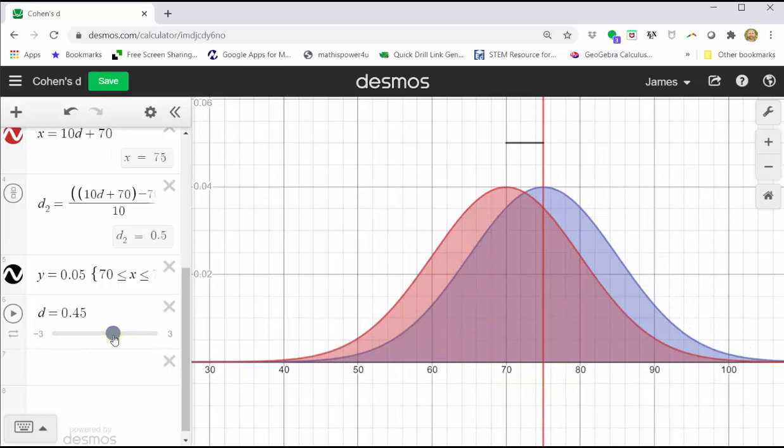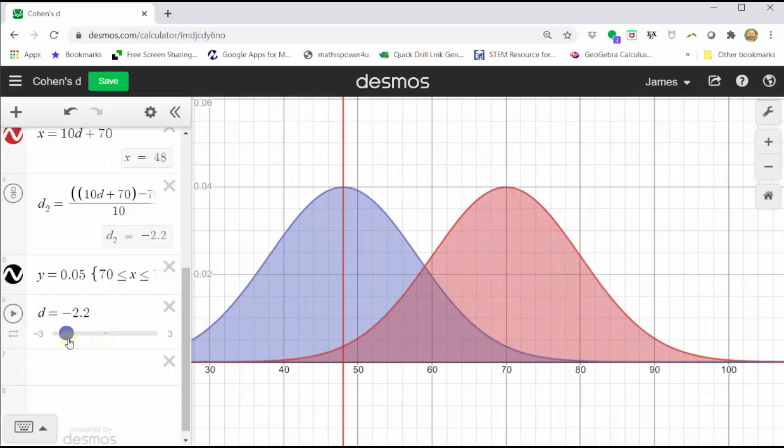Notice how when d is negative, the distribution being considered has a smaller mean.